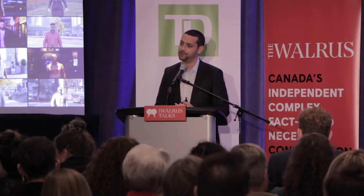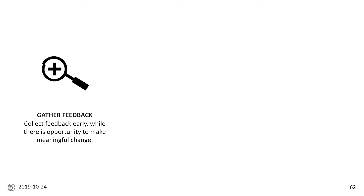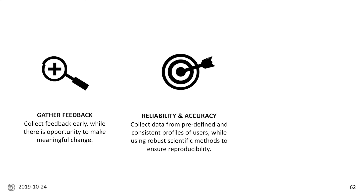There are different things that can be done. The first is to gather feedback and do so early — at a point where it's not too late, because if it is too late you become locked into a design and are therefore reluctant to make changes. The second is to collect data that is reliable and accurate: use scientific methods, maintain a consistent profile of users, follow standard processes, and allow iteration over time.